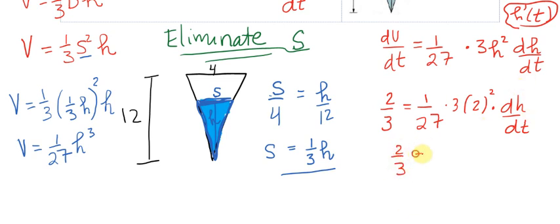You have 2/3 is equal to 1 over 27 times 3 times 4 dh/dt. Let's move it all to this side, so we have now 27 times 2/3 times 1/12.